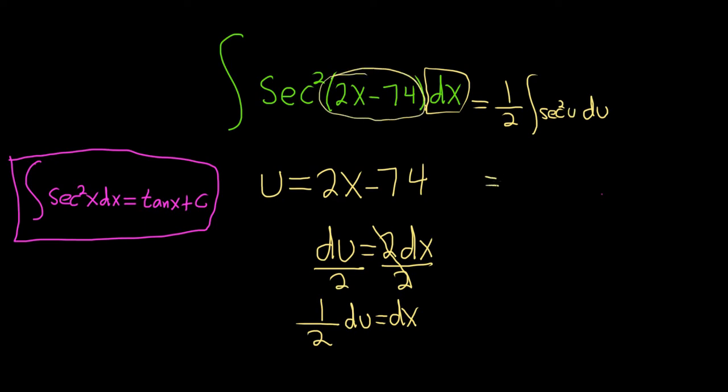And now we use our formula. We can just simply ask ourselves, what's a function whose derivative is secant squared? So tangent. So this is 1 half tangent of u plus c.